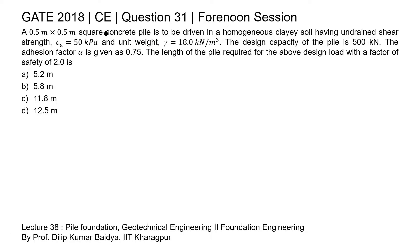This is question 31 of the civil engineering paper of GATE 2018 afternoon session. A 0.5 meter by 0.5 meter square concrete pile is to be driven in a homogeneous clay soil having undrained shear strength Cu equal to 50 kilo Pascal and unit weight gamma equal to 18 kilo Newton per meter cube. The designed capacity of the pile is 500 kilo Newton. The adhesion factor alpha is given as 0.75. The length of the pile required for the above design load with a factor of safety of 2 is to be determined.